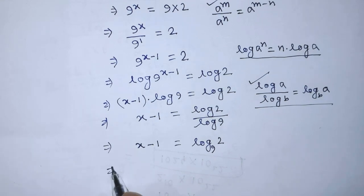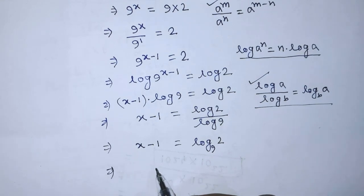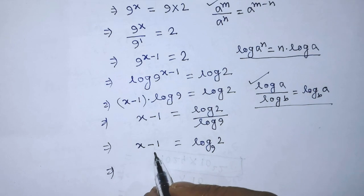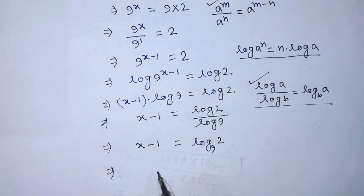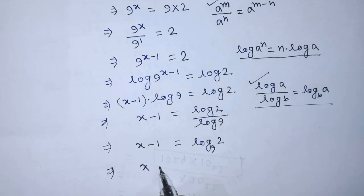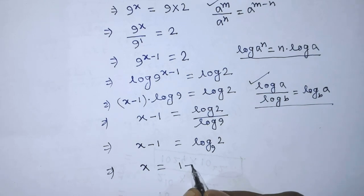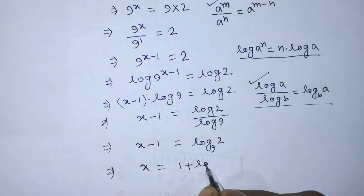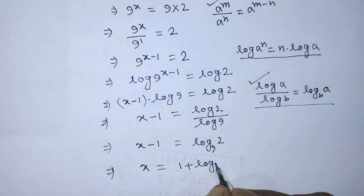Now to find the value of x from this equation, we have to transpose minus 1 from left hand side to right hand side. So we can write x is equal to 1 plus log of 2 to the base 9.